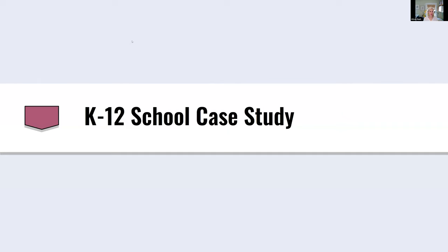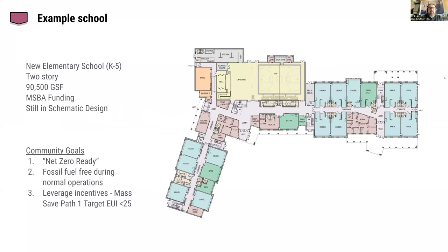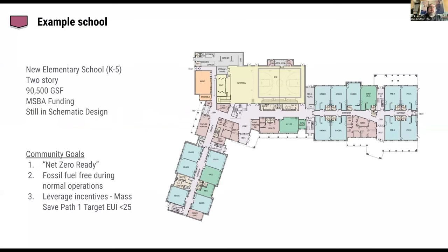Now passing it to Chris Schaffner of the Green Engineer to go over how he thought about a K-12 school. He will share some work done on K-12 school projects — still in early stages, so this is somewhat generic, but it shows the approach. The example school is a two-story elementary school that's about 90,000 square feet, an MSBA-funded project currently in the schematic design phase. The community set goals very compatible with the new code: net zero ready, fossil fuel free during normal operations, and leveraging incentives.